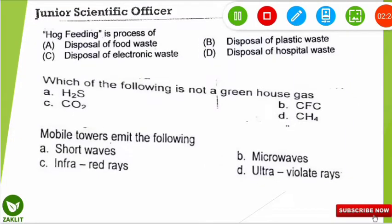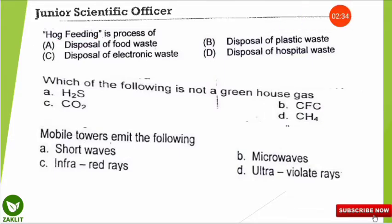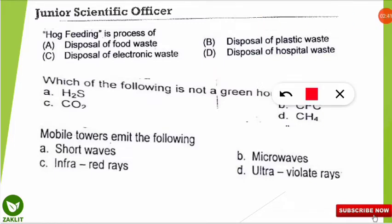The next question is also very important and for some of you it will be a new term. The question is: hog feeding is the process of which of the following disposal? Hog feeding is the process of disposal of food waste. It is not common in India, but hog feeding is where food waste is fed to hogs and other animals — mostly swine — for effective disposal of food waste.